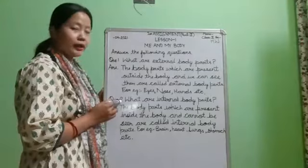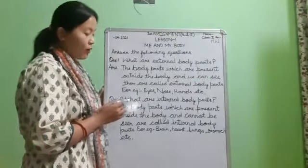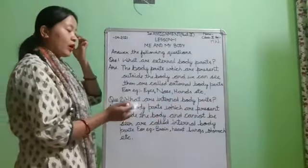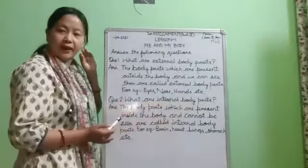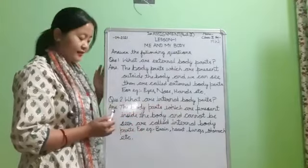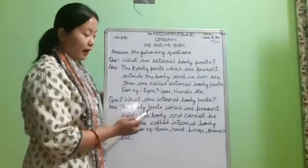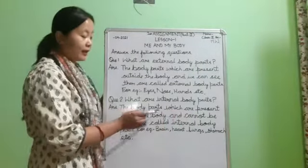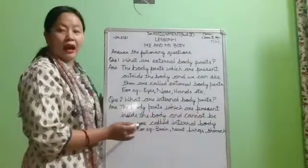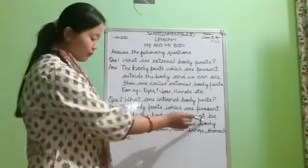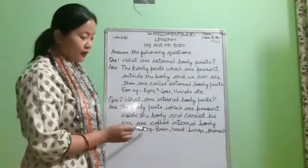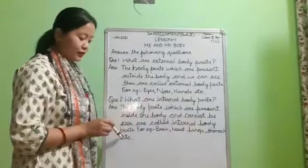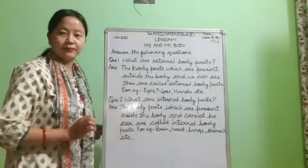Question 2: What are internal body parts? Write 'Ans.' and the answer: The body parts which are present inside the body and cannot be seen are called internal body parts. For example: brain, heart, lungs, stomach, etc.